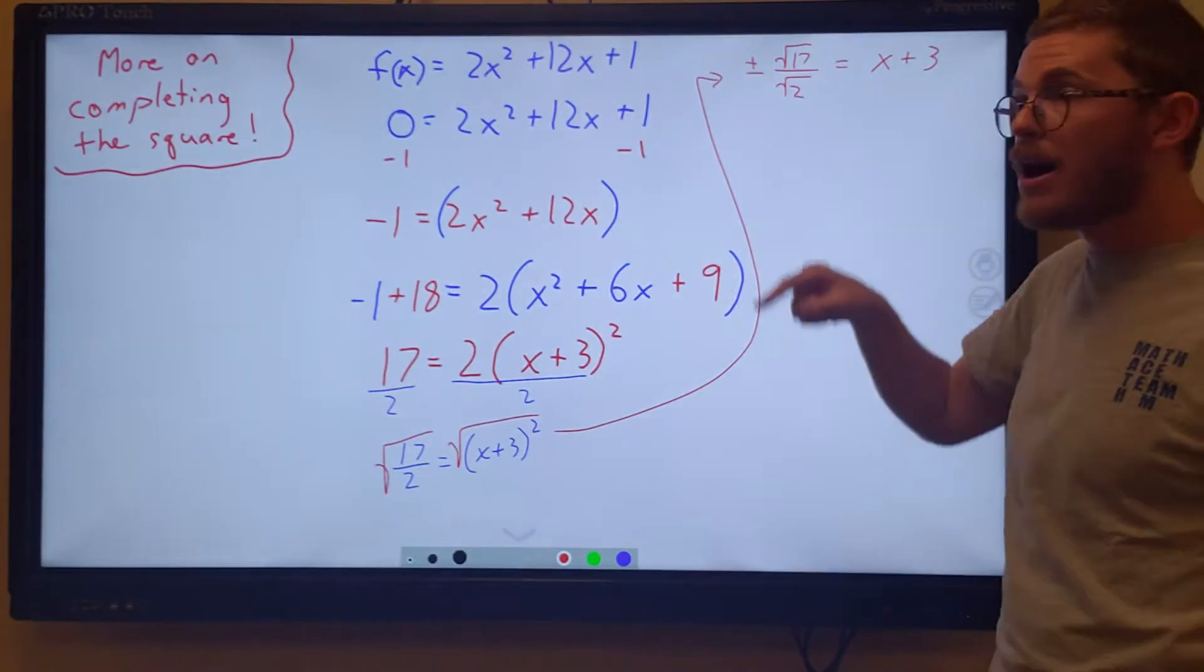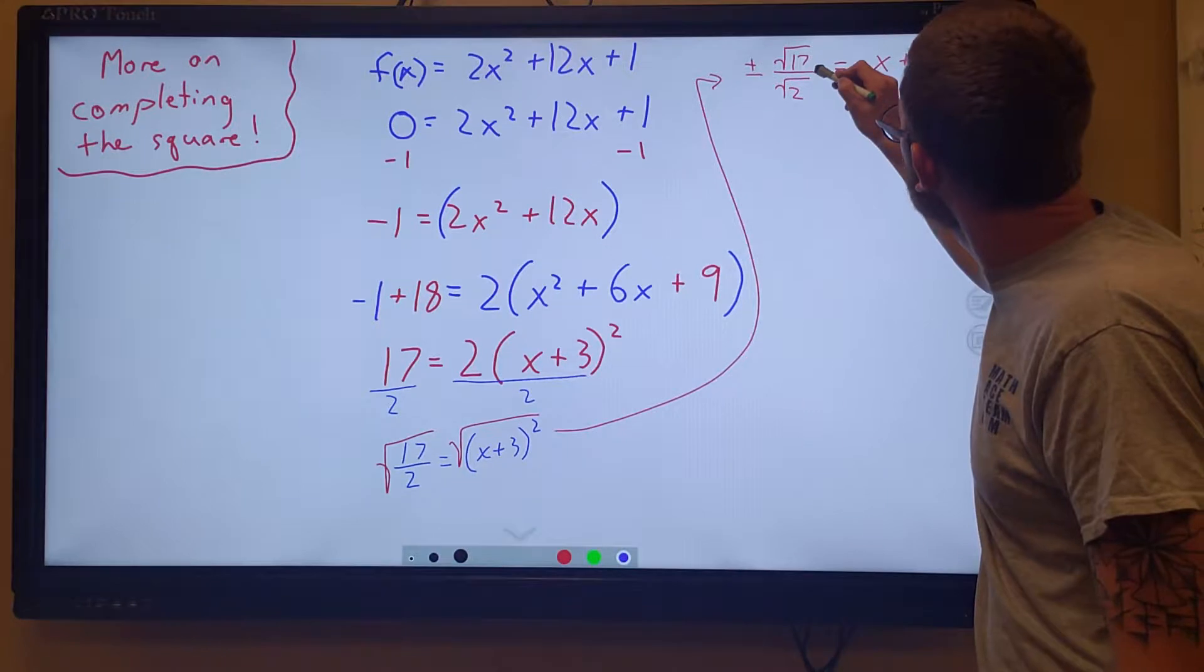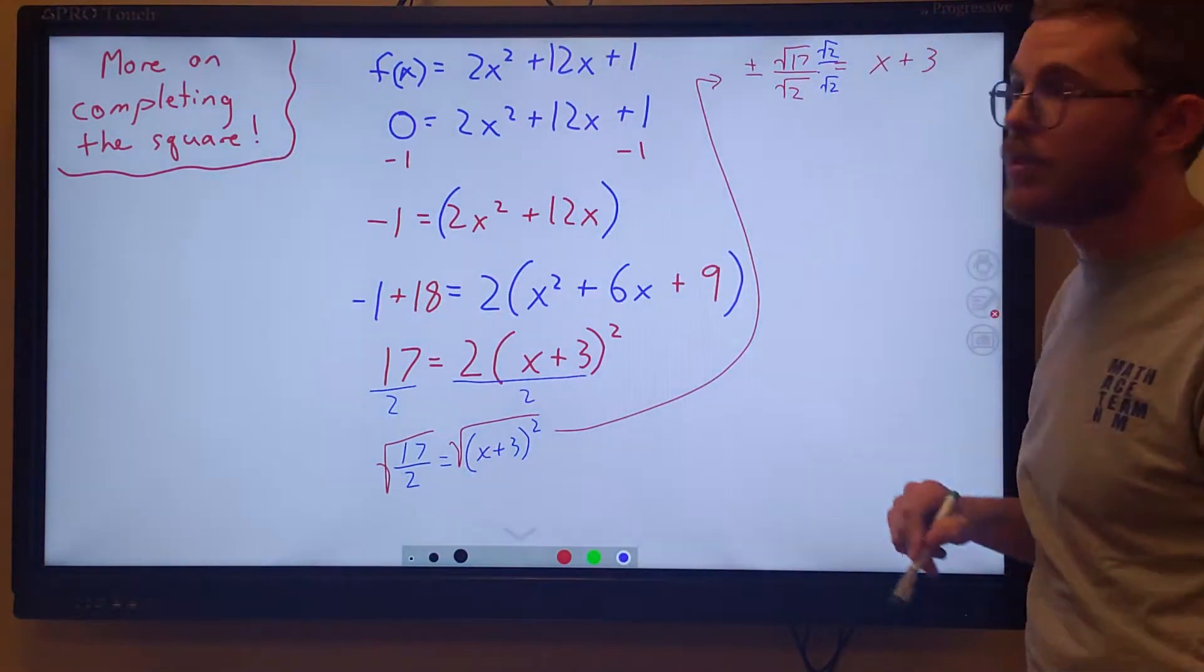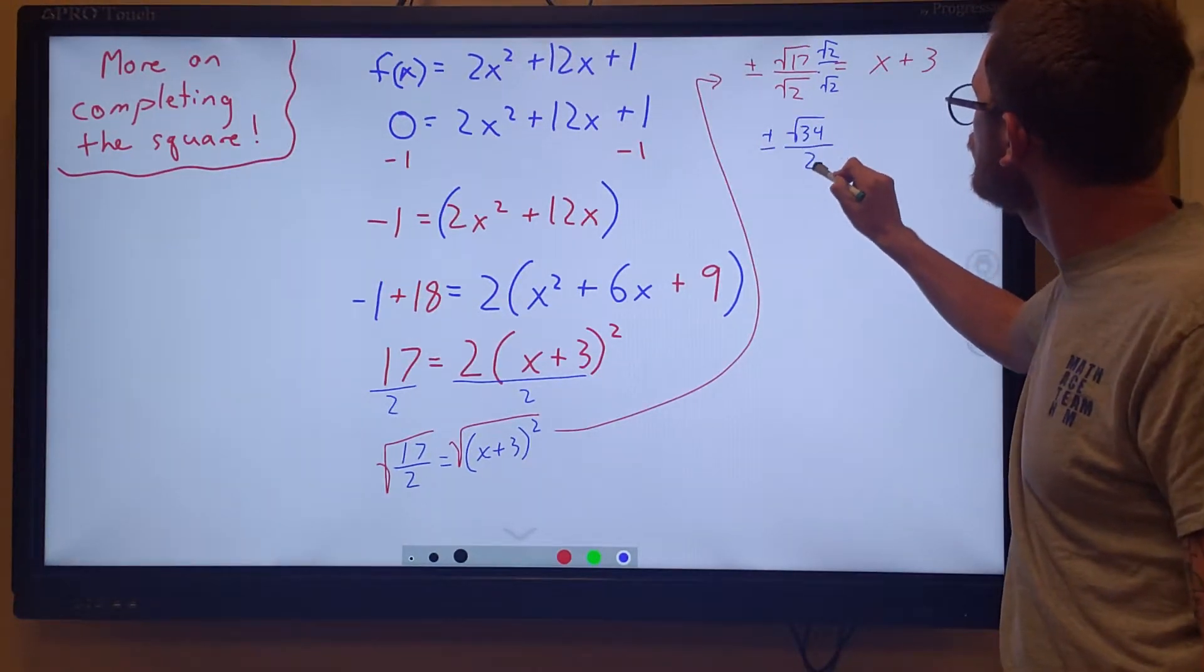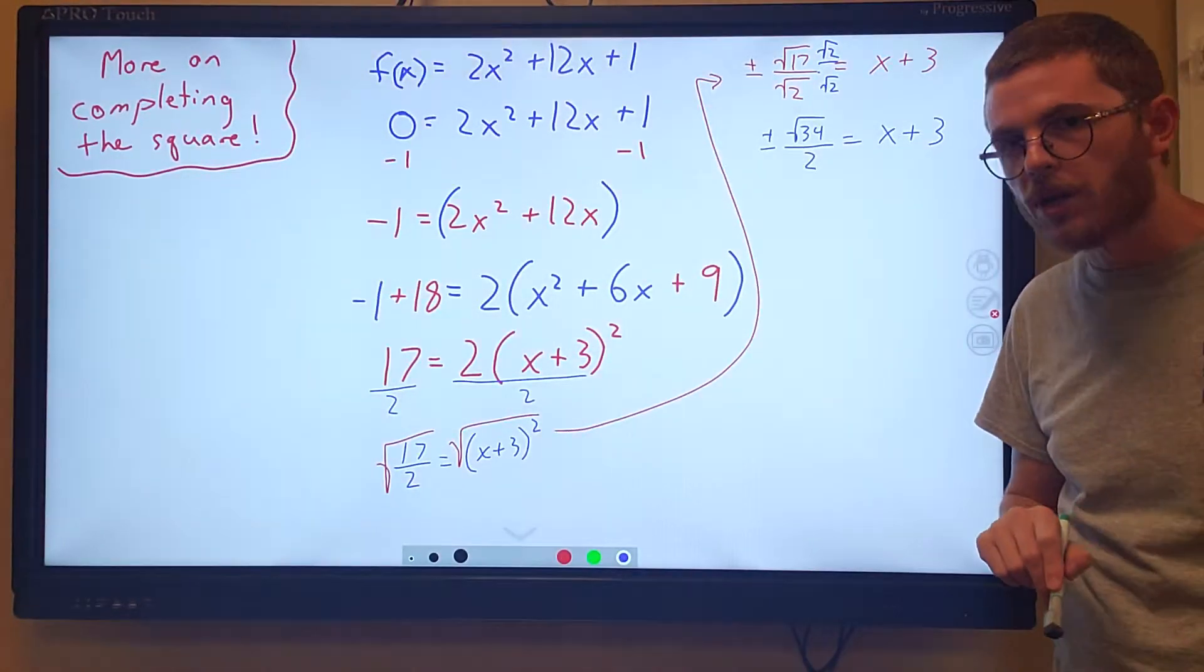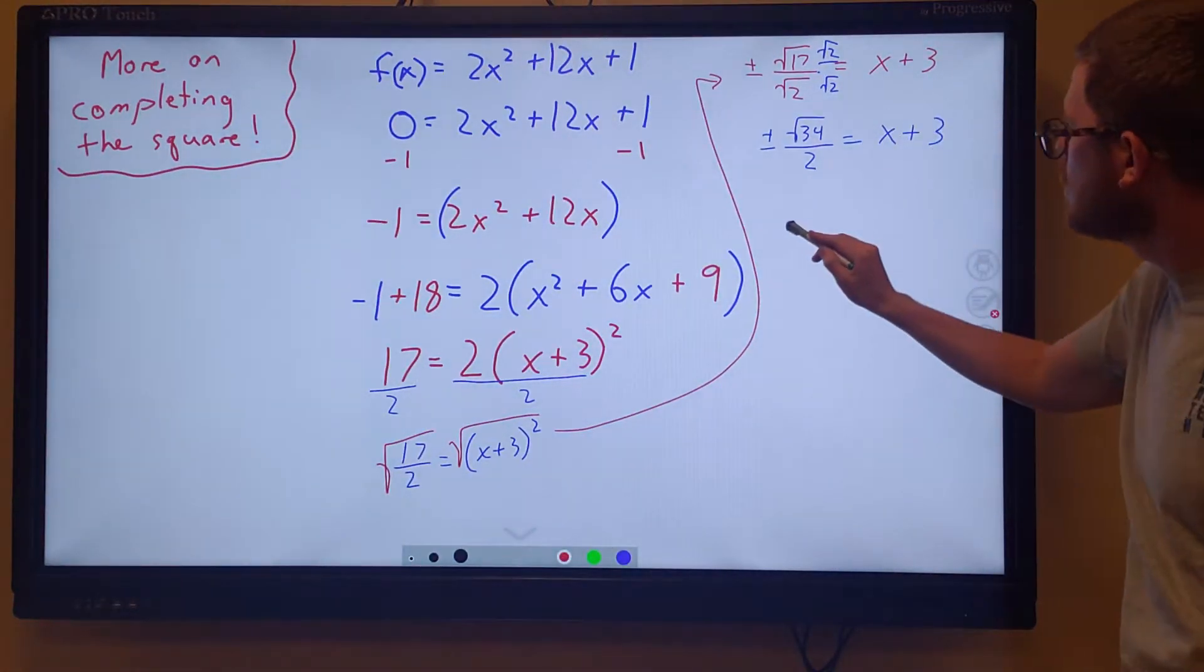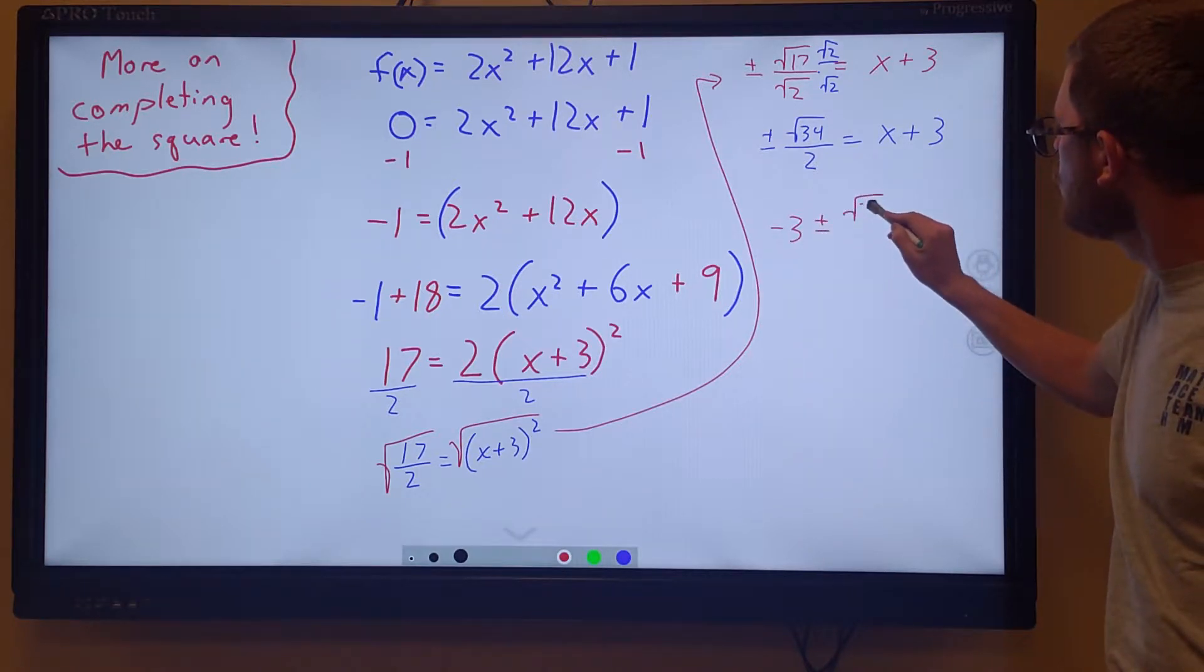We do have a radical in the denominator. In order to get rid of that radical in the denominator, I'm going to rationalize this by multiplying by the square root of 2 on the top and the bottom. This gives me positive negative root of 34 over 2 equals x plus 3. Again, we're solving for x, so we're going to subtract 3 from both sides, leaving us with negative 3 plus or minus root 34 over 2.